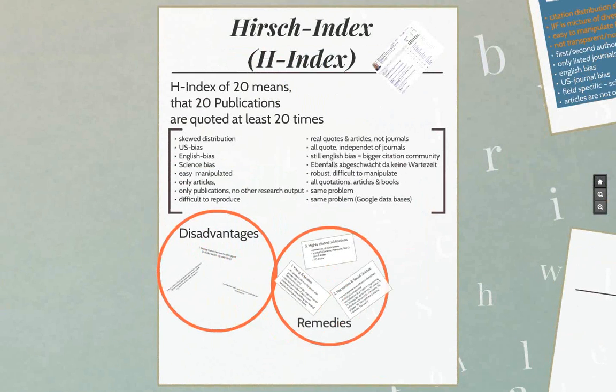Now let's go into the h-index in more detail. The name 'h-index' comes from its inventor — it was constructed by Hirsch and described in a very short four-page article, 'An Index to Quantify an Individual's Scientific Research Output,' published in 2005. An h-index of 20 means you have 20 publications that are each quoted at least 20 times.